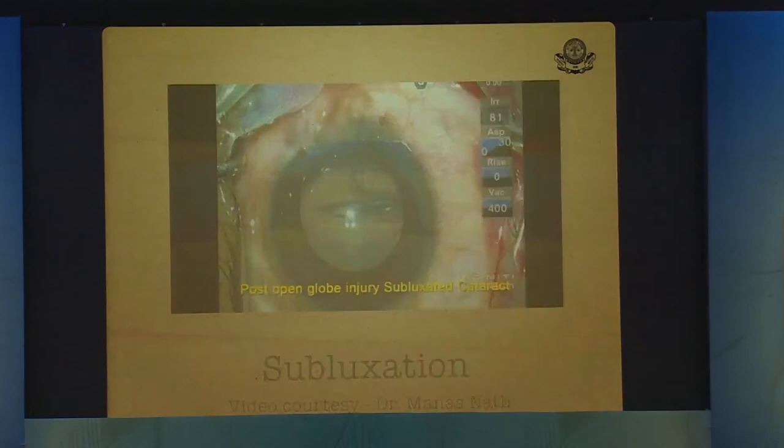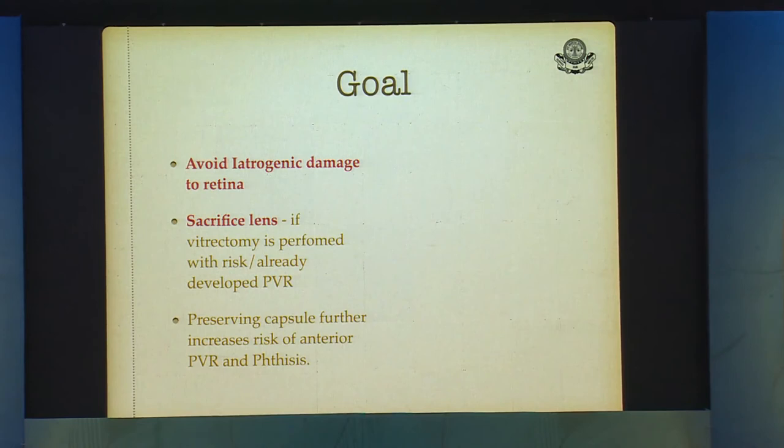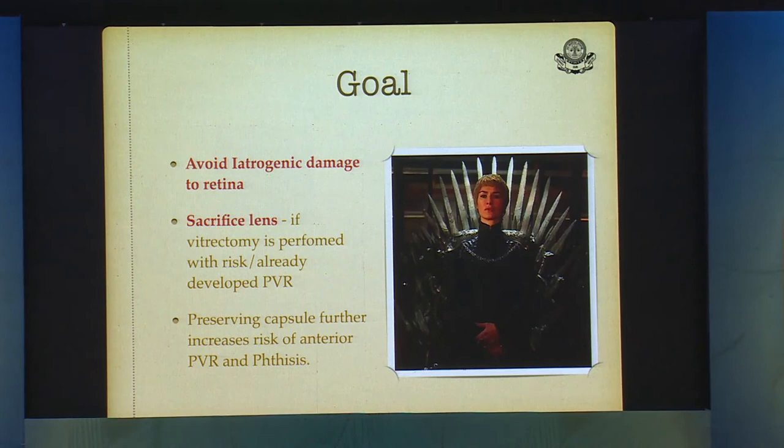When dealing with subluxation cases, the most important goal is to avoid iatrogenic damage to the retina. Sometimes you have to sacrifice the lens. The priority is good wound integrity, no inflammation, no PVR changes — the retina has to be protected. Preserving the capsule can sometimes increase the risk of anterior PVR and phthisis.